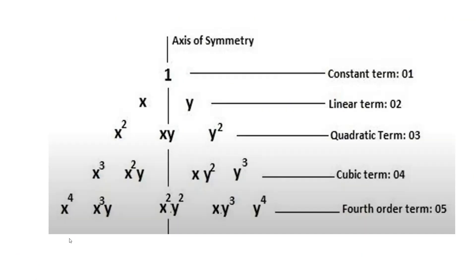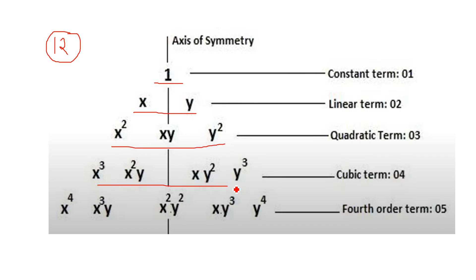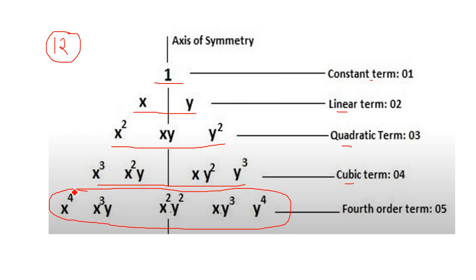Looking at the Pascal triangle, we must pick 12 terms because our total degrees of freedom are 12. Taking the first term (1), then 2 terms, total 3; then 3 more, total 6; then 4 more, total 10. So 10 terms come from the first 4 rows: constant, linear, quadratic, and cubic. For the remaining 2 terms, from the 5 available quartic options, we pick x³y and xy³.